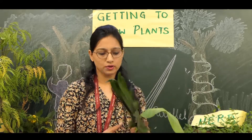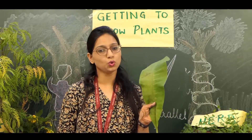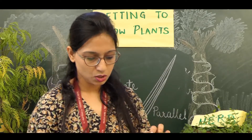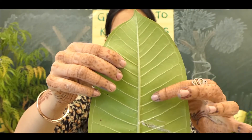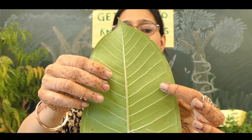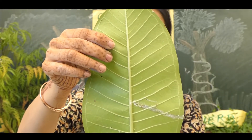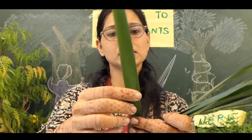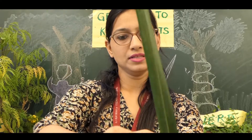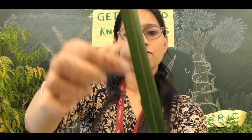I have two leaves here. In this one you have parallel venation, and in this one you have reticulate venation. In the reticulate leaf you can see the mid rib, then branches coming out, and from those branches very thin network-like veins. In the other leaf there is a mid rib with other veins running parallel to it — that is parallel venation.